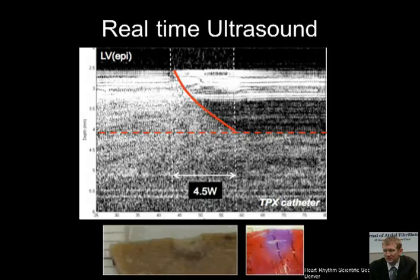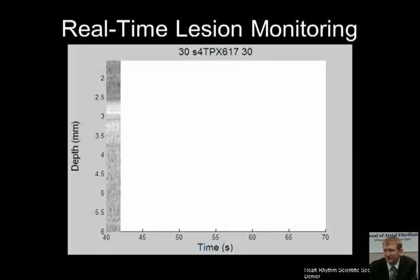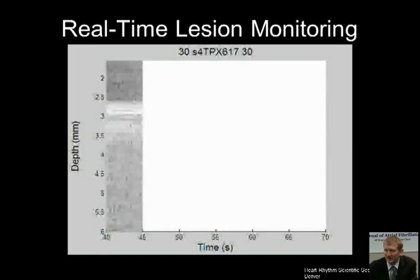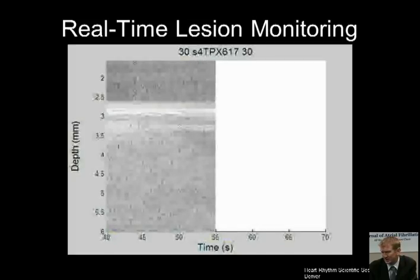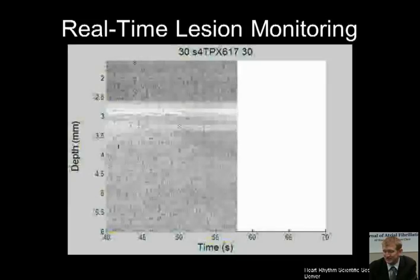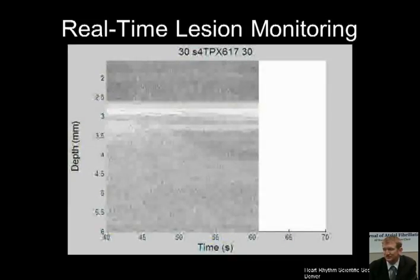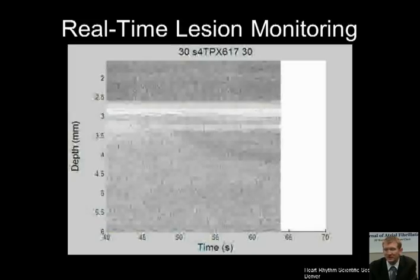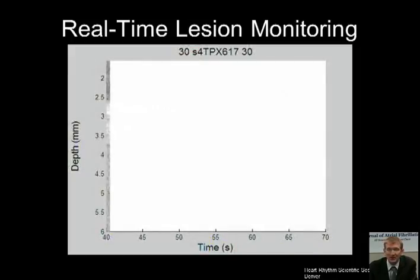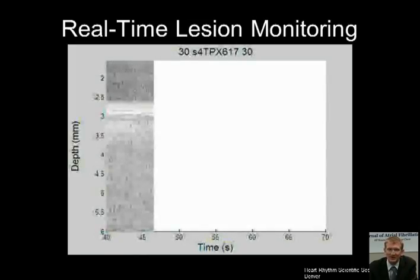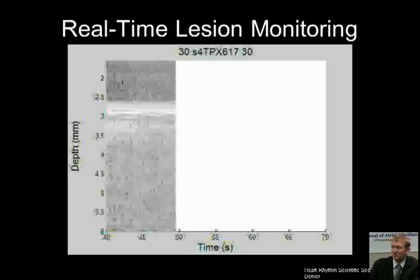Here is what we see in real time. At about five seconds in, the power is started. Then gradually, as time progresses, you'll see a very subtle change in the ultrasound contrast where it goes darker and darker, reaching a plateau at about 15 seconds into the ablation. You can see that on the left-hand side of the panel the contrast is uniform, whereas on the right-hand side there has been a clear change, and this is due to tissue necrosis.